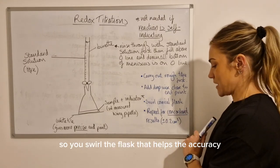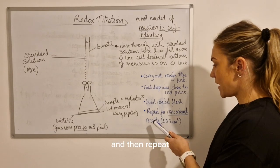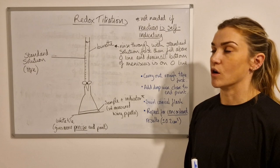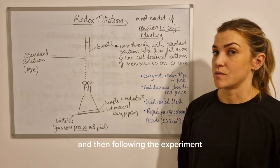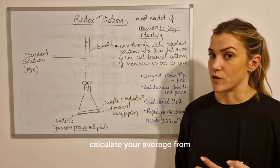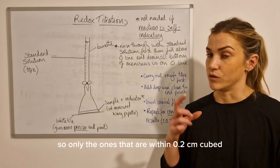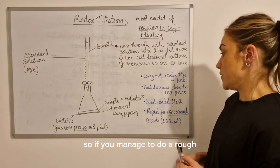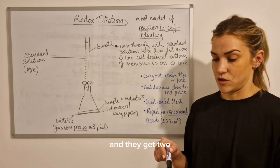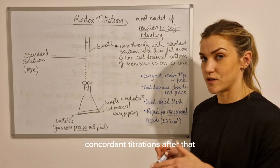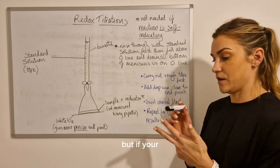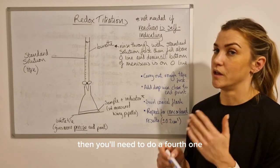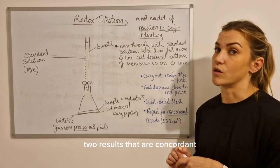And then repeat for the concordant results, and that's within 0.2 centimeters cubed of each other. And then following the experiment, you would only calculate your average from any results that are concordant, so only the ones that are within 0.2 centimeters cubed of each other. So if you manage to do a rough and then get two concordant titrations after that - the minimum you'll ever do is three - but if your second and third titrations aren't concordant, then you'll need to do a fourth one, and then keep going until you get two results that are concordant.